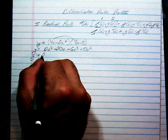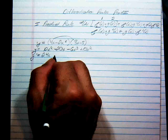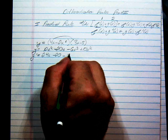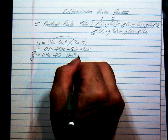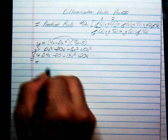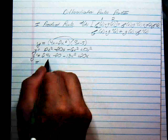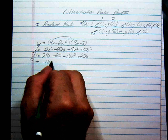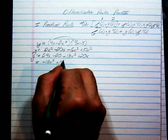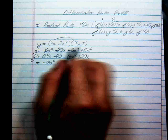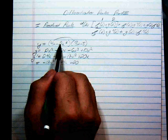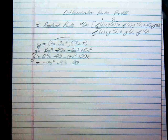Then you could take the derivative using the sum and difference rule, the constant multiple rule, and the power rule. That gives 24x minus 20 minus 18x squared plus 20x. Cleaning it all up: negative 18x squared plus 44x minus 20. That's the derivative of this product without using the product rule.